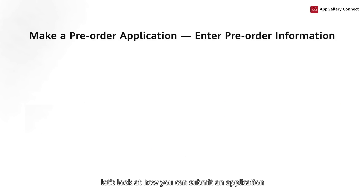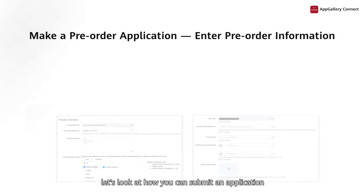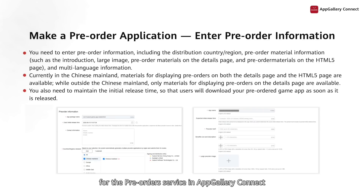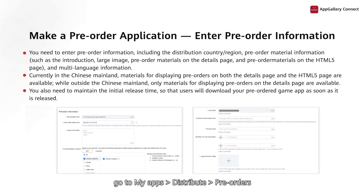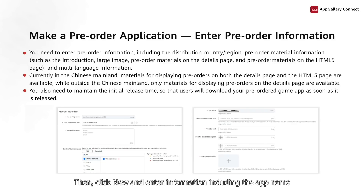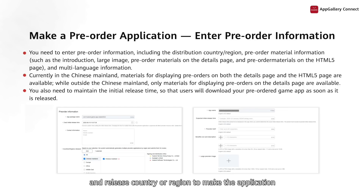Next, let's look at how you can submit an application for the pre-order service in AppGallery Connect. Sign in to AppGallery Connect, go to My Apps, Distribute, then Pre-orders. Then click New and enter information including the app name, initial release time, and release country or region to make the application.